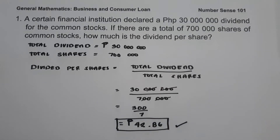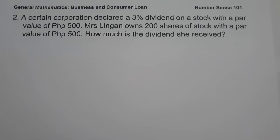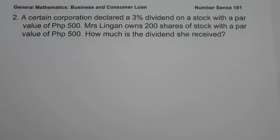So 42.86 pesos is the amount of dividend per share and that will be our answer. On example number two, a certain corporation declared a 3 percent dividend on a stock with a par value of 500 pesos. Mrs. Lingan owns 200 shares — how much is the dividend she received?